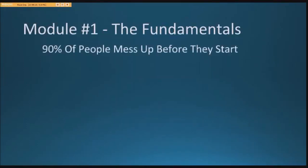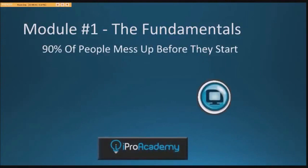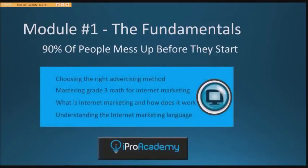In Module 1, the fundamentals are covered. As Fred points out, 90% of people starting an online business mess up from the start. This module covers lessons on how to choose the right advertising method. Key metrics are explained such as CPC, EPC, CPM, ECPM, CTR, LCV, CPL, CPA, and CPS — terms every marketer needs to know and understand.